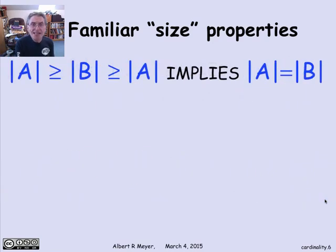Well, let's look at an example where the size properties hold, but they're less obvious. Because here's another familiar size property. If A and B are each of size greater than or equal to the other one, then they're the same size. So if the size of A is greater than or equal to the size of B, and the size of B is greater than or equal to the size of A, then A and B are the same size. Now, this is certainly true for finite sets. It's kind of, you don't even think about that fact.